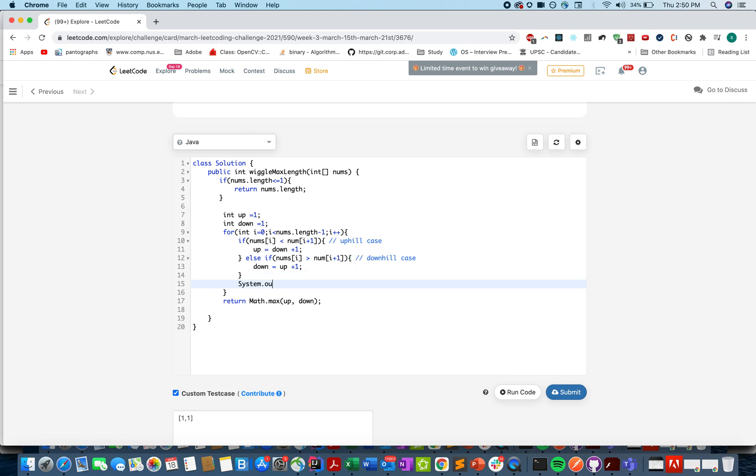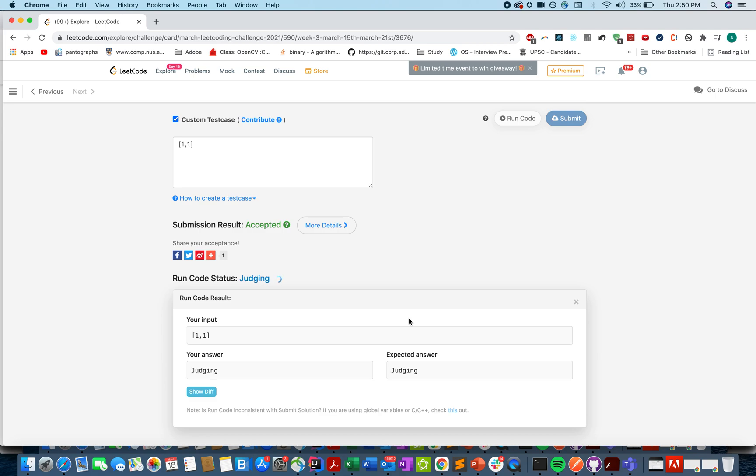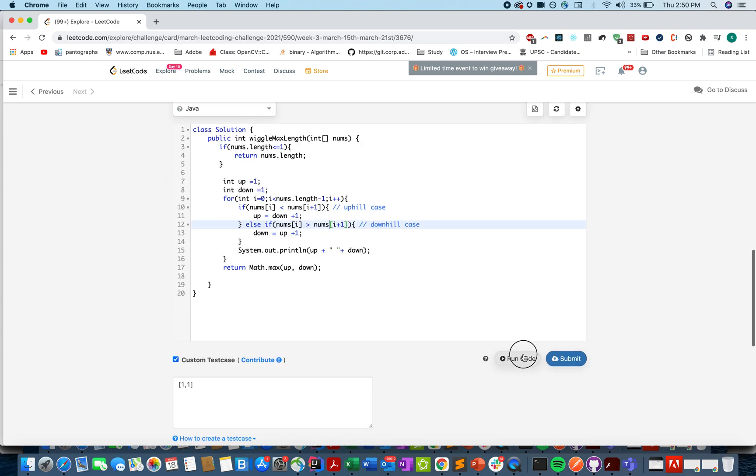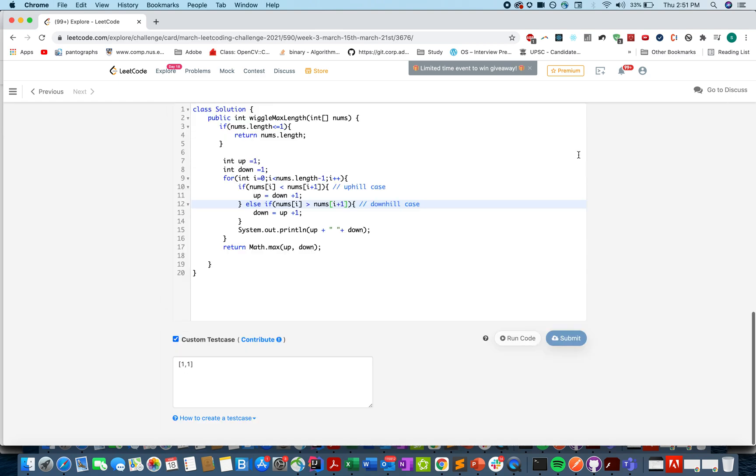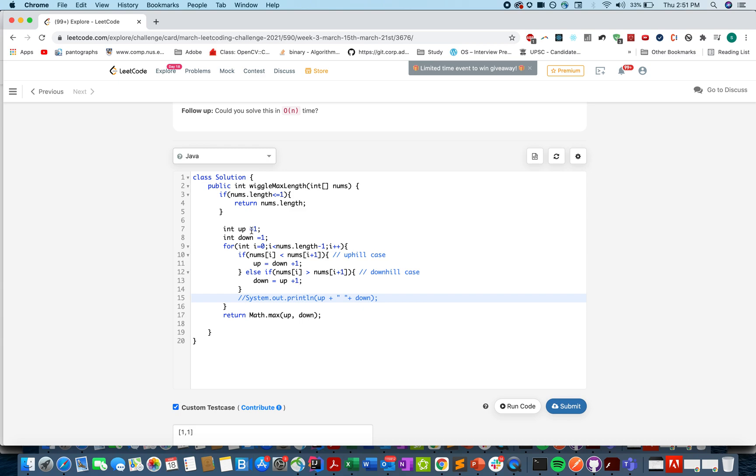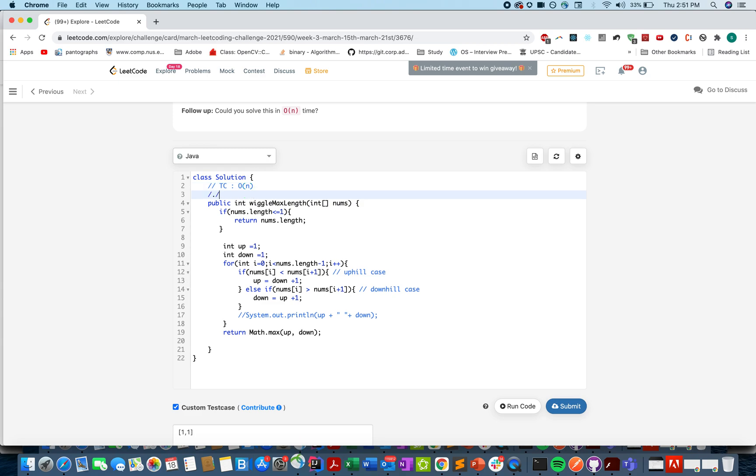Let me just print those values. Let's see what is actually happening. System dot out, up plus space down. Looks good. Let's try this. Looks like a typo. Looks great. Let me just submit it. Accepted. What is the time complexity of this approach? The time complexity is order of n, and space complexity is order of 1. Thanks for watching the video. Hope you enjoyed it.